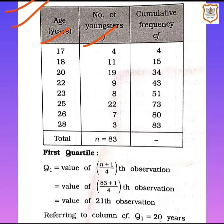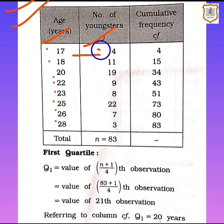We have arranged the ages in ascending order: 17, 18, 20, 22, 23, 25, 26, 28. The corresponding frequencies are 4, 11, 19, and so on — rearranged to match the ascending order of age.